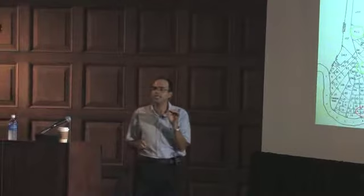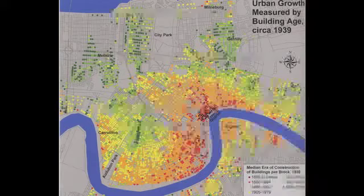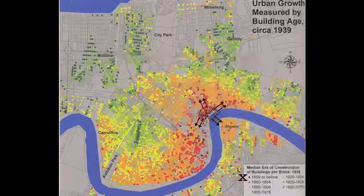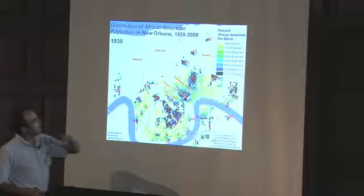Why would people move into these low-lying areas? Because of what we now see as an ill-placed faith in technology — a belief that you no longer had to worry about topography and hydrology, that drainage and levees had taken care of all that. So people moved into these new suburban environments.